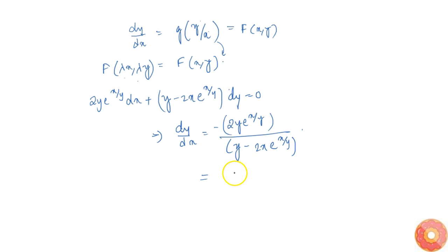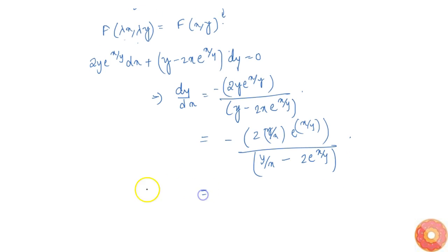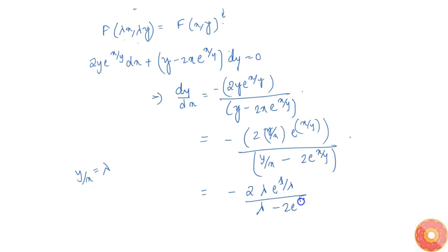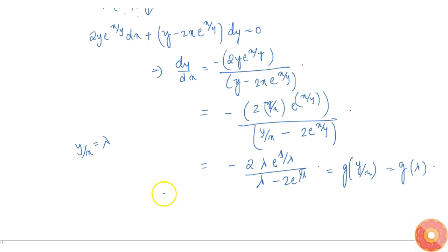Dividing both numerator and denominator by x, we get 2·(y/x)·e^(x/y) divided by (y/x) − 2·e^(x/y). Writing y/x = λ, this becomes −2λ·e^(1/λ) divided by λ − 2·e^(1/λ), which is purely a function g(λ) = g(y/x). Thus we have shown the equation is homogeneous.